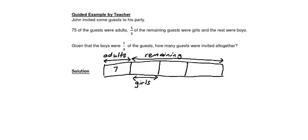So I have a five here. One-third of the remaining guests were girls and the rest were boys. You can see that this represents boys. And you can see that two parts is actually one quarter — if these two parts is one quarter, so two parts is one quarter.